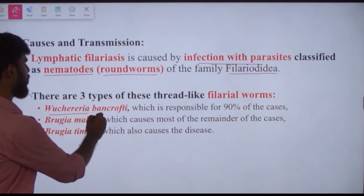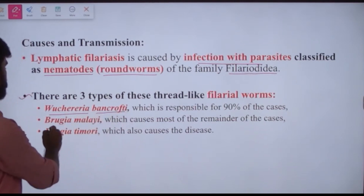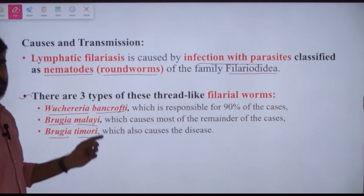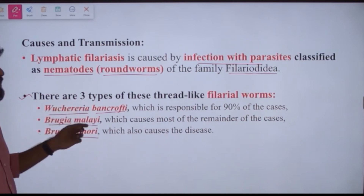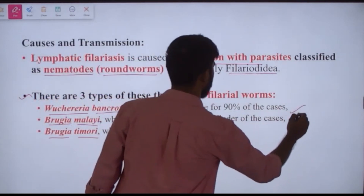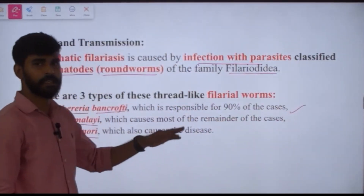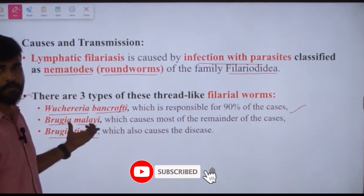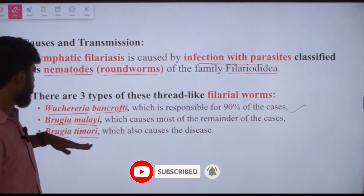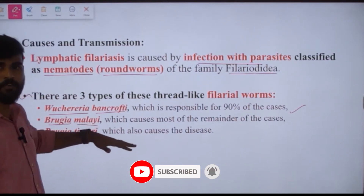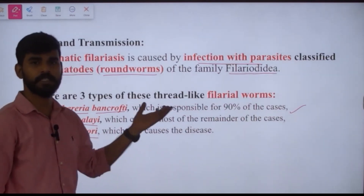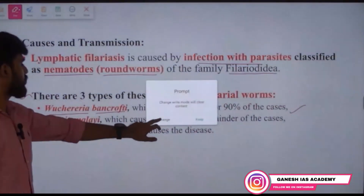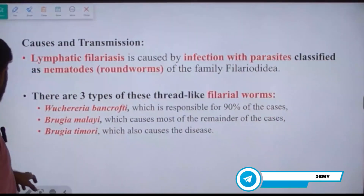There are three types of filarial worms: Wuchereria bancrofti, Brugia malayi, and Brugia timori. Of these, Wuchereria bancrofti is responsible for 90% of cases. The remaining cases are due to Brugia malayi and Brugia timori, which are also capable of causing filariasis.